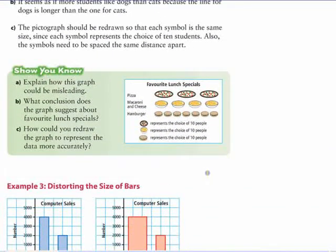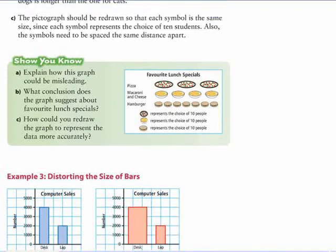The Show You Know, hopefully you answered some of the questions here. Explain how the graph could be misleading. It's the same idea, right? These pizzas are huge. Three pizzas are kind of as long as those four bowls of macaroni and cheese or as long as whatever that is, seven hamburgers. The fact that the pictures are different sizes really makes it look misleading. So redrawing it, make them all the same size or use the same symbol.